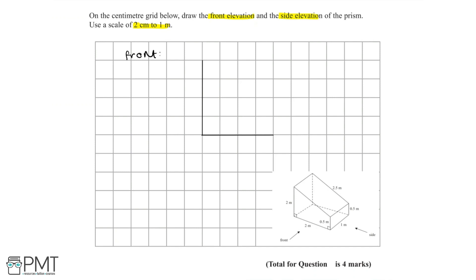We then have a side length of 0.5m. If 2cm represents 1m, if we half that, we'll get 1cm represents 0.5m. So we'll draw a 1cm line on our diagram. To complete the trapezium, we need to draw a line from here down to here. But we need to label our diagram.